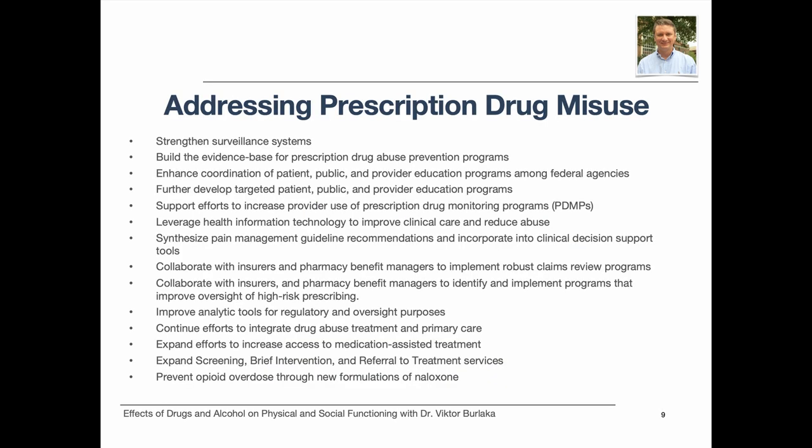The United States Department of Health and Human Services produced a report in 2013 containing recommendations for policy and programmatic efforts to help address prescription drug misuse. These recommendations include strengthening surveillance systems, building the evidence base for prescription drug abuse prevention programs, enhancing coordination of patient, public, and provider education programs among federal agencies, and other measures that could effectively address this issue.